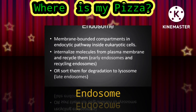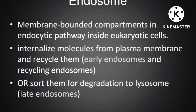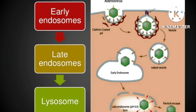The endosome is a membrane-bound compartment in the endocytic pathway inside eukaryotic cells that internalizes molecules from the plasma membrane and recycles them. Early endosomes and recycling endosomes sort them for degradation to lysosomes. When an endosome combines with a lysosome it forms a phagosome, which performs enzymatic activity, breaks down and assimilates what is necessary, and ejects the remainder as a tertiary lysosome.